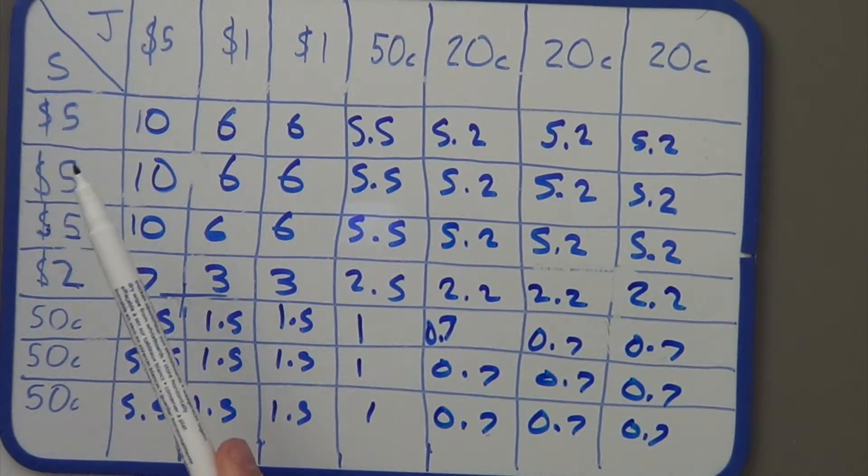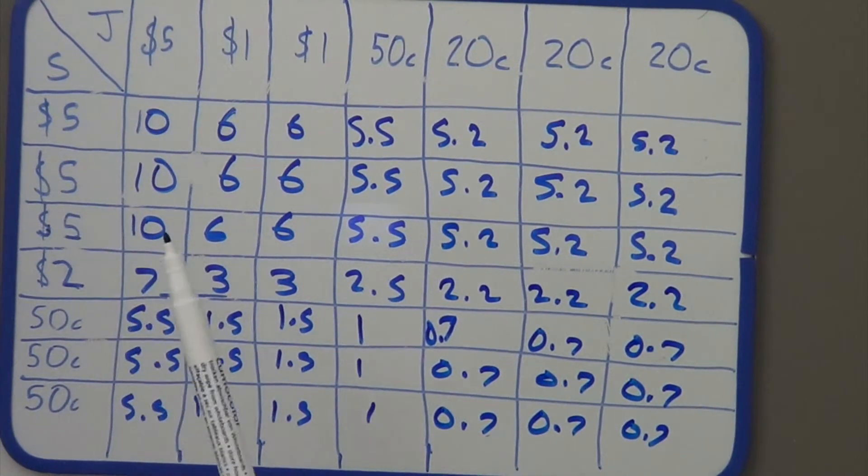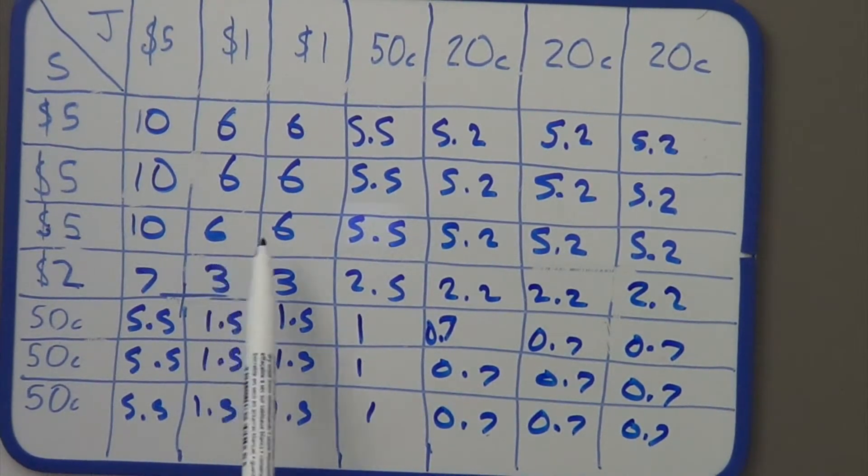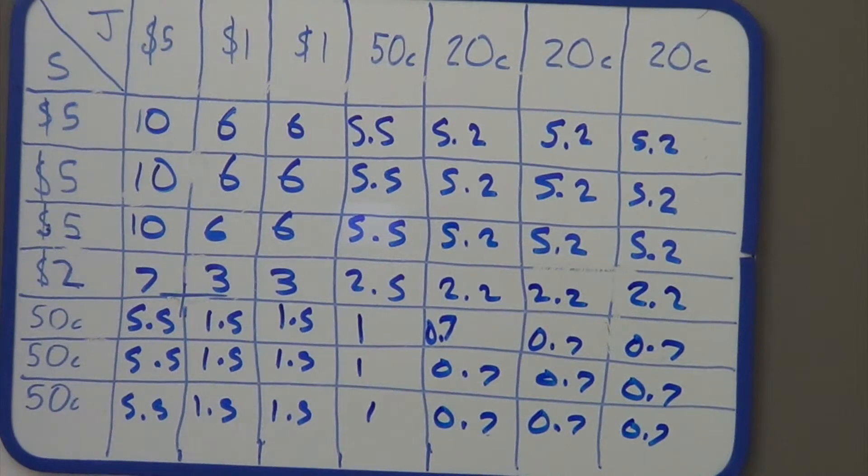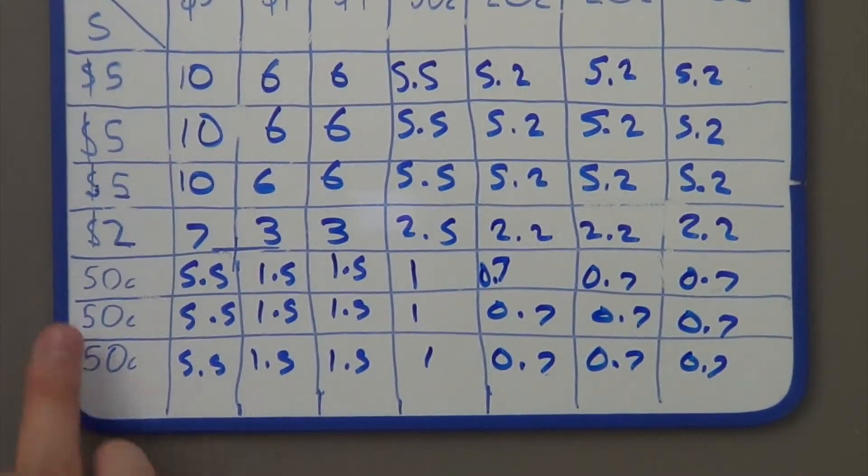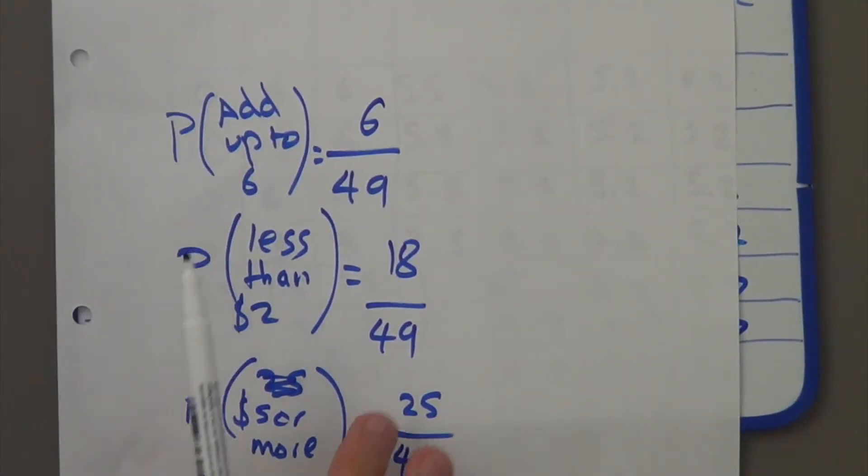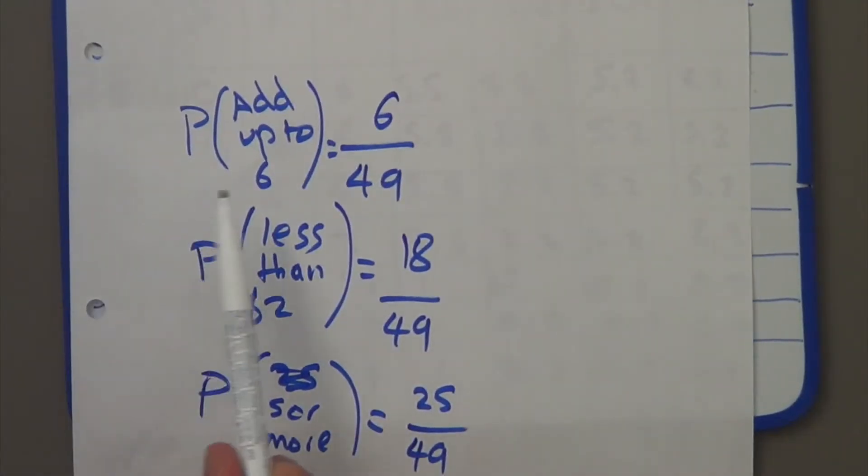So, when it says, so the next question is, what is the probability that the coins will add up to 6? Well, let's look at how many numbers add up to 6. Well, 1, 2, 3, 4, 5, 6 is 6. So, that means the probability that they add up to 6 is going to be 6 over 49. Because there's 6 ones that we're looking for, and then out of the 49 possible ones.